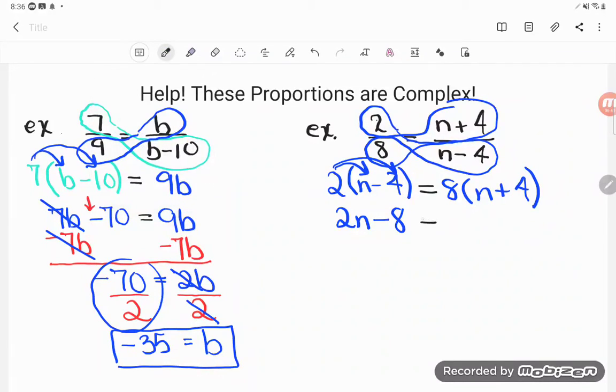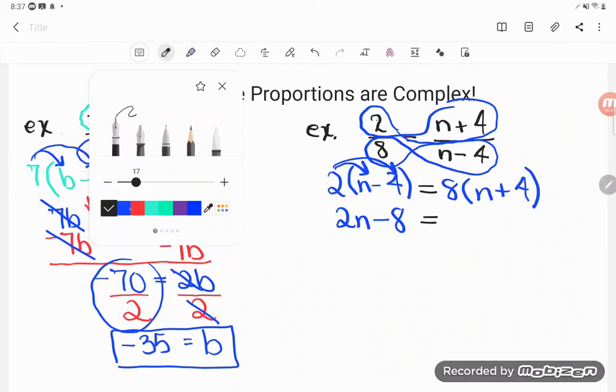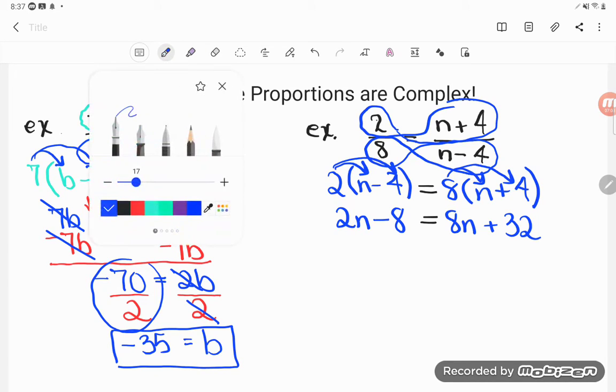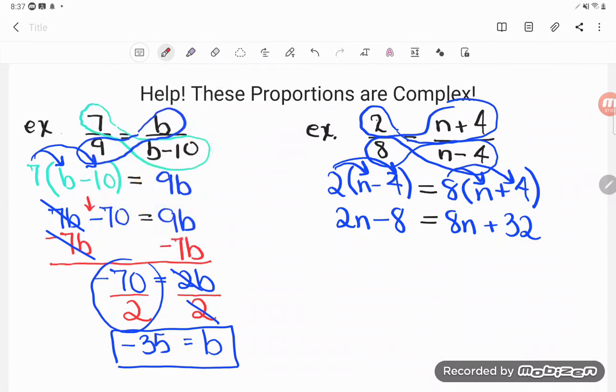That's equal to what I get from simplifying the right-hand side. The right-hand side does need to be simplified. 8 times N is 8N, and 8 times positive 4 is positive 32. Now we've simplified the left-hand side as much as we could, and the right-hand side as much as we could. It's time to make sure we have our letters on the same side. We see a letter on the left, a letter on the right. How can we get the letter alone if letters are all over the place? Let's get our letters together.